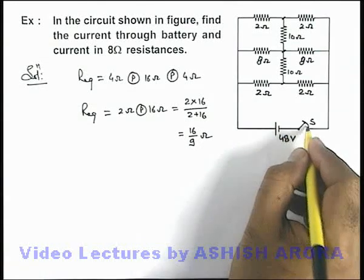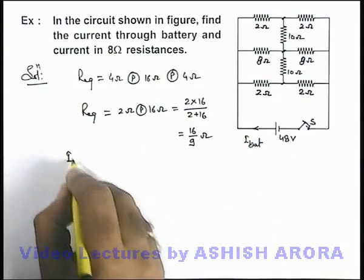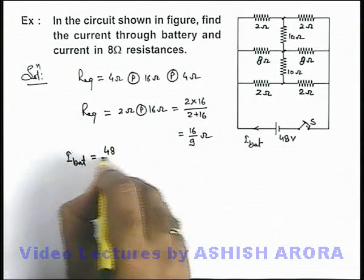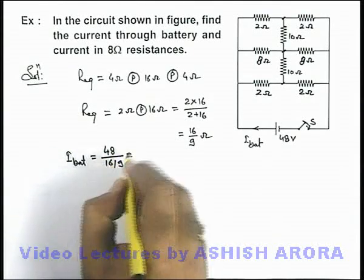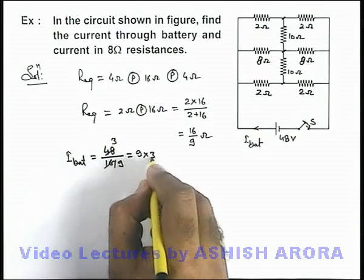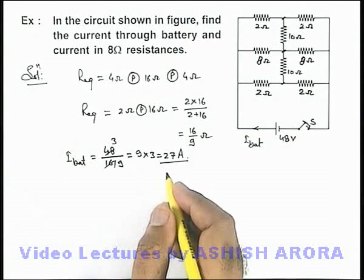So after closing the switch if we find out the current through battery, then current through battery can be taken as 9 multiplied by 3, that is 27 ampere, that is the total current flowing through the battery.